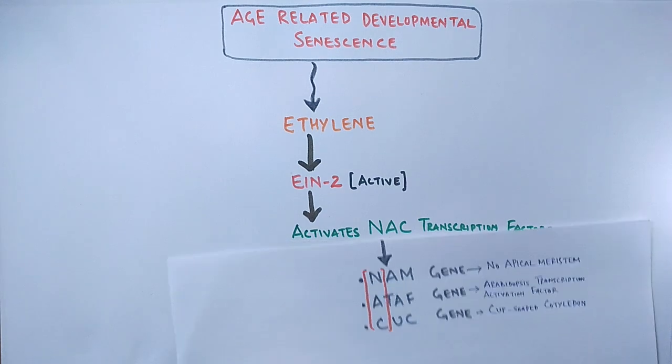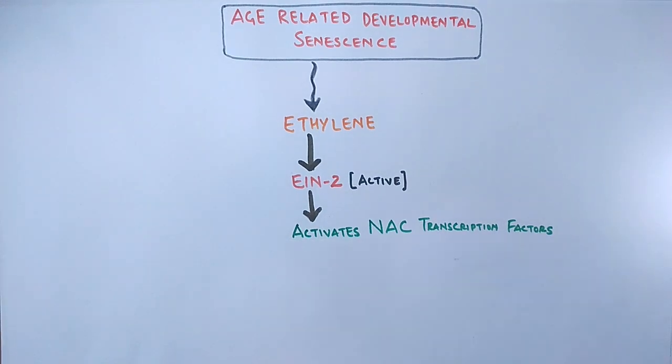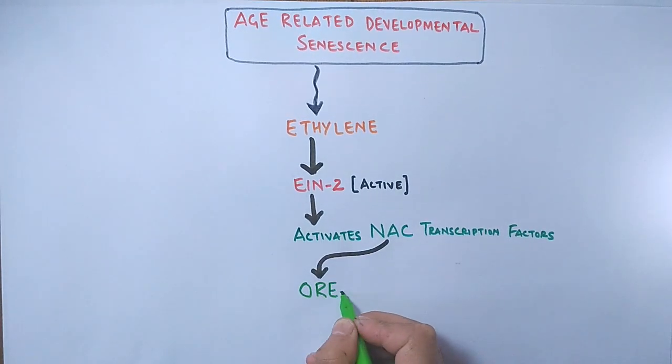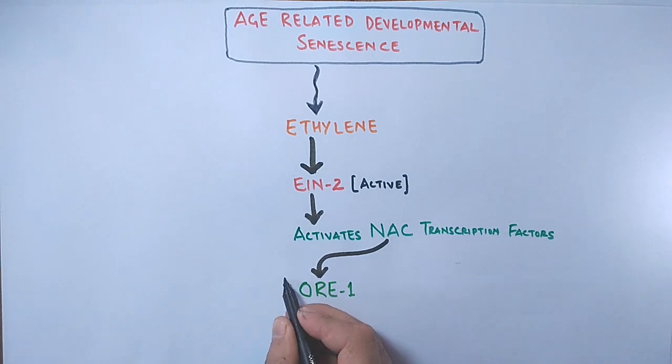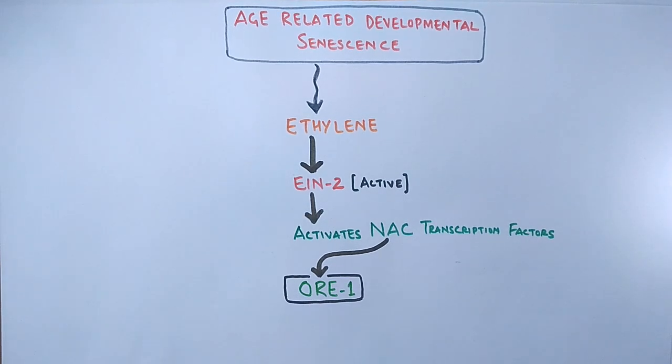Furthermore, we see these NAC transcription factors further activate the ORE1 gene, which itself is also a NAC transcription factor. So we can say one NAC transcription factor activates the other NAC factors. Mostly in Arabidopsis, we see it is the ATAF factor which activates the ORE1 gene.